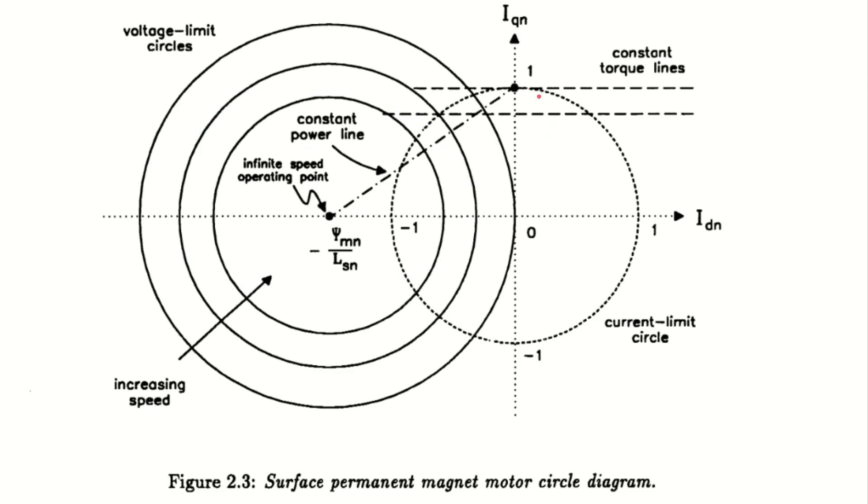We can also see the constant torque lines. If we choose a current vector that moves along one of those lines, our torque output will be constant. So we can understand from this diagram that for a given current in the Q axis, adding current in the D axis won't have any effect on the torque, meaning it does not affect the motor's magnetic flux.